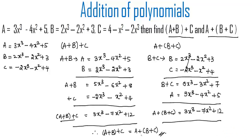From this we can conclude that the set of polynomials has the associative property under addition. This was a basic introduction on how to solve an example on polynomials. Hope you understood the concept — do like and subscribe to vthacademy.com. Thanks for watching, have a nice day.